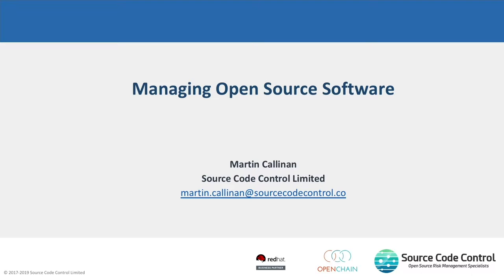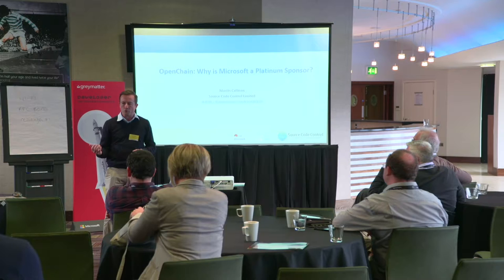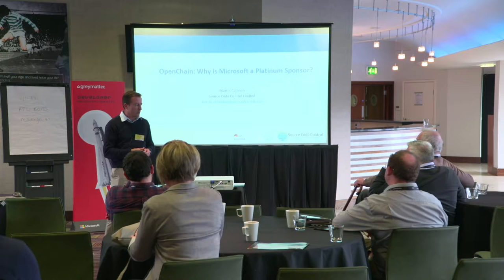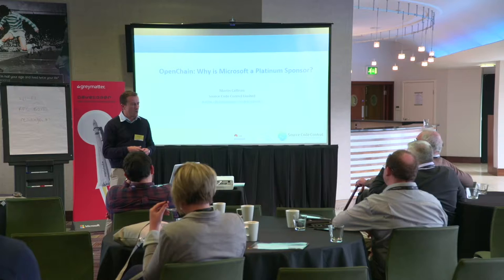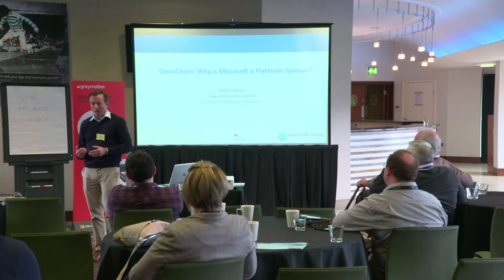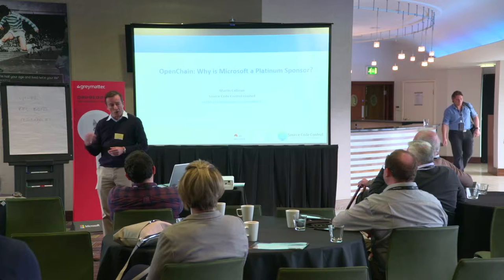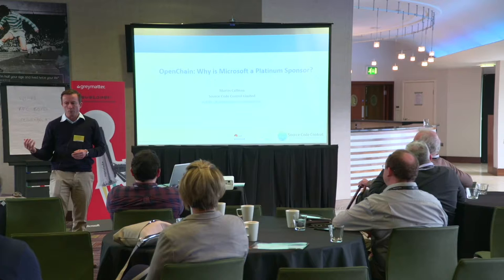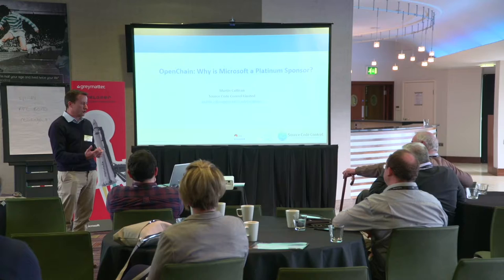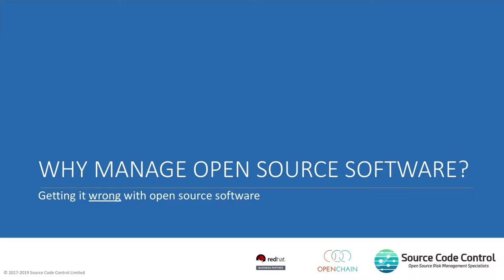Good afternoon everybody. It's a graveyard shift. I work for a company called Source Code Control. We work with companies who develop software and use open source to manage risk. That risk is typically IP-related, as various open source licenses can impact IP value. We also help companies with security vulnerability management. This presentation is about an initiative called OpenChain. I'll explain as we get into the presentation what OpenChain is about — where it can go wrong if you do use open source in your software developments and you don't manage it.